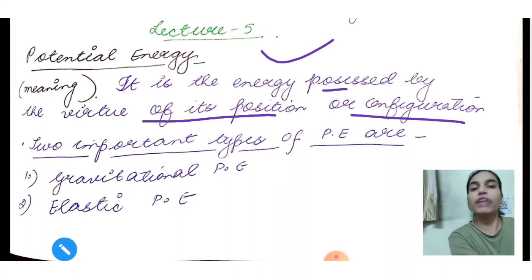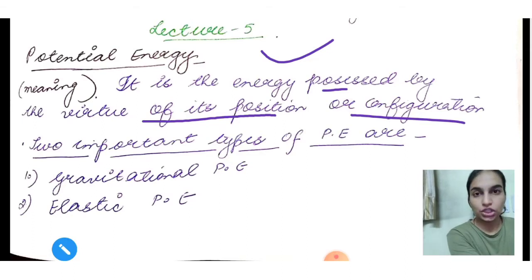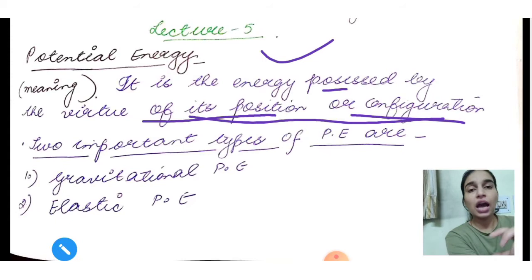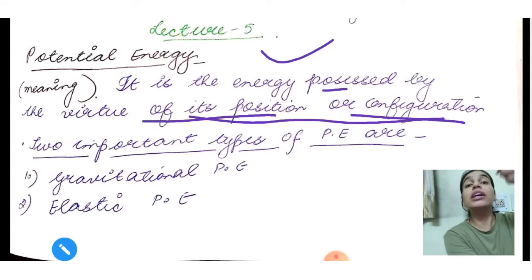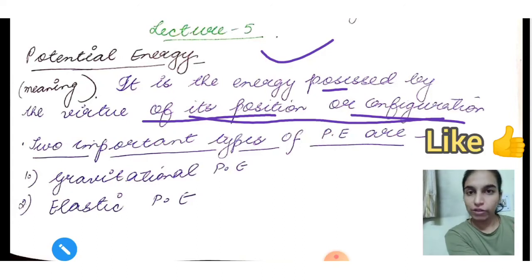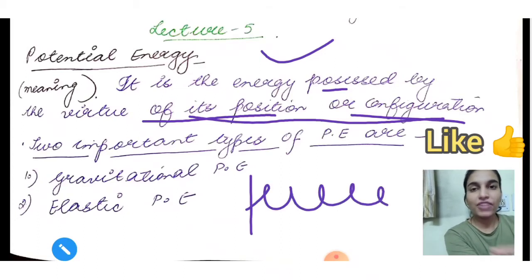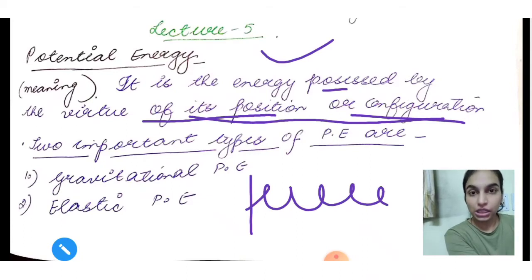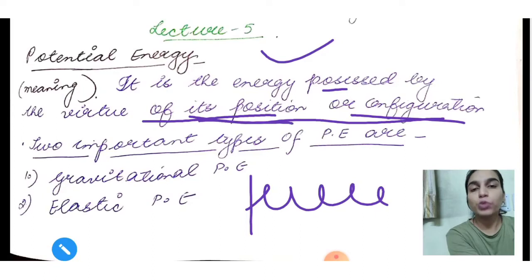The definition given in books is actually about the change in potential energy, not potential energy itself. We can understand potential energy as energy possessed by virtue of position or configuration. If we raise a body from one point to another, we do work on it, and that work is stored in the body as potential energy. Similarly, when you compress a spring, the restoring energy stored is also potential energy.